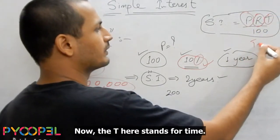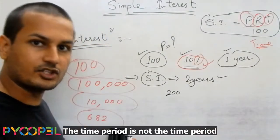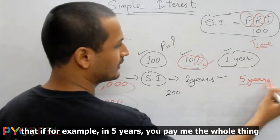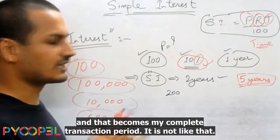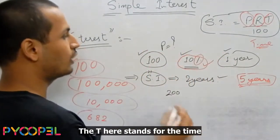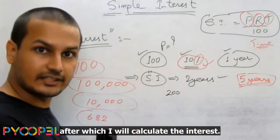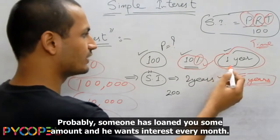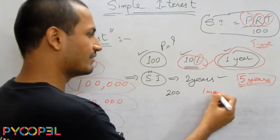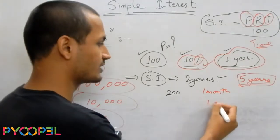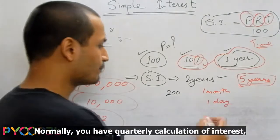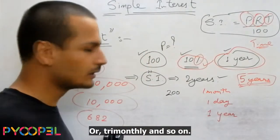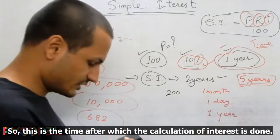T here stands for time — the time period or duration. This is not the time period after which the whole transaction gets completed. The T here stands for the time after which the interest is calculated — at what frequency it is done. Probably someone has loaned you some amount and wants you to pay interest after every month, or after every day. Normally, you have quarterly or yearly calculation of interest. So T is the time after which the calculation of interest is done.